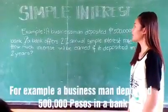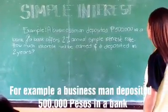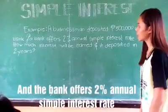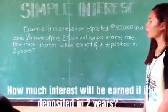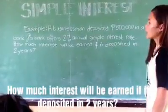For example, a businessman deposited 500,000 pesos in a bank. And the bank offers 2% annual simple interest rate. How much interest will be earned if it deposited in 2 years?